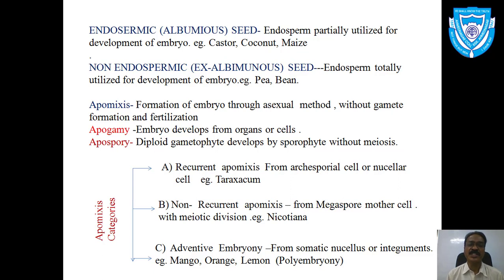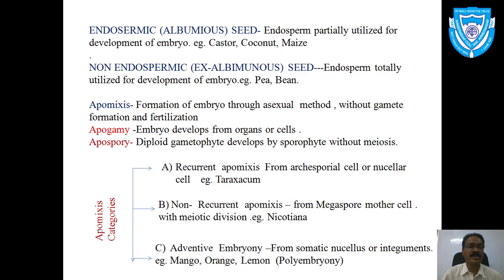Apomixis is the formation of an embryo without sexual reproduction — without gamete formation and fertilization. It is similar to an asexual method. Apomixis is categorized into recurrent apomixis, non-recurrent apomixis, and adventive embryony. Related terms include apogamy, where the embryo develops from organs or cells, and apospory, where the diploid gametophyte develops from the sporophyte without meiosis.